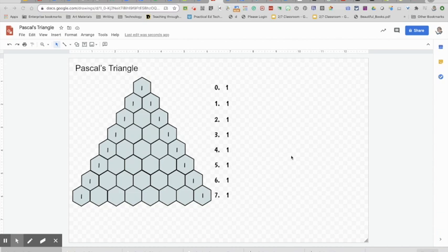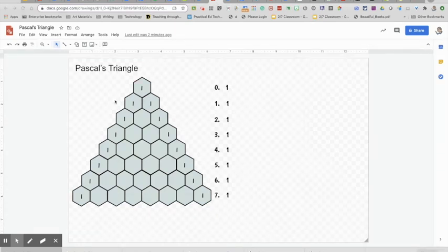Here we have the beautiful and mysterious triangular conundrum called Pascal's Triangle. It's named after a French mathematician, Blaise Pascal.